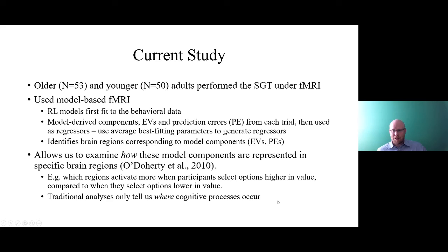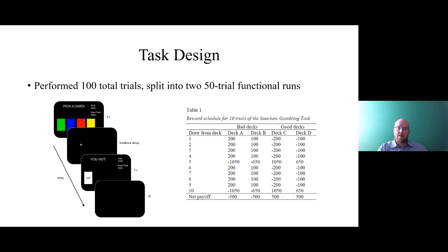Here is the task design: two bad decks and two good decks. Bad decks give a higher frequency of gains but have negative expected value on average, whereas good decks have higher average expected value but give less frequent gains. Participants performed 100 trials split into two 50-trial functional runs, picking a deck on each trial, being shown what they received, then making their next selection.